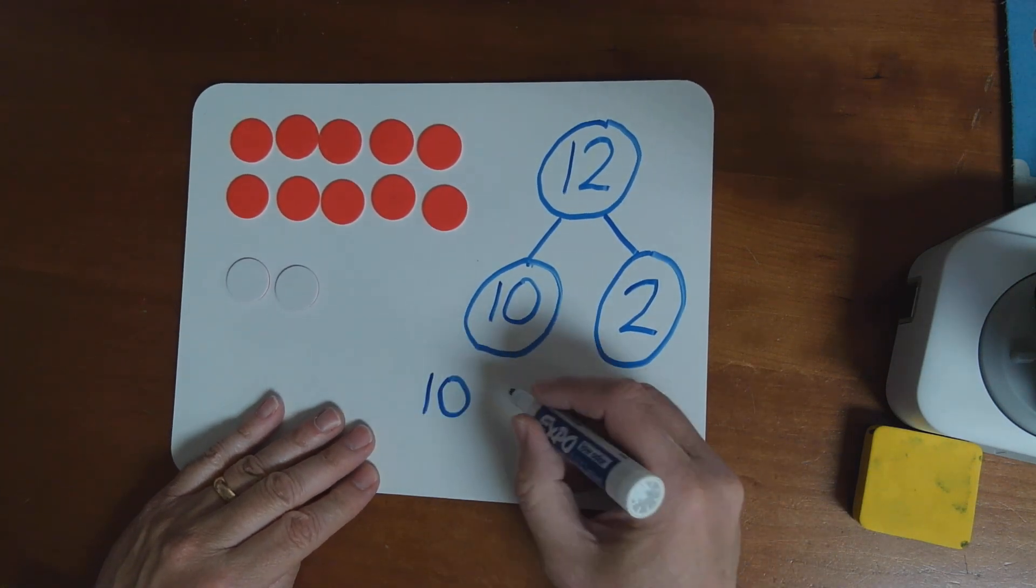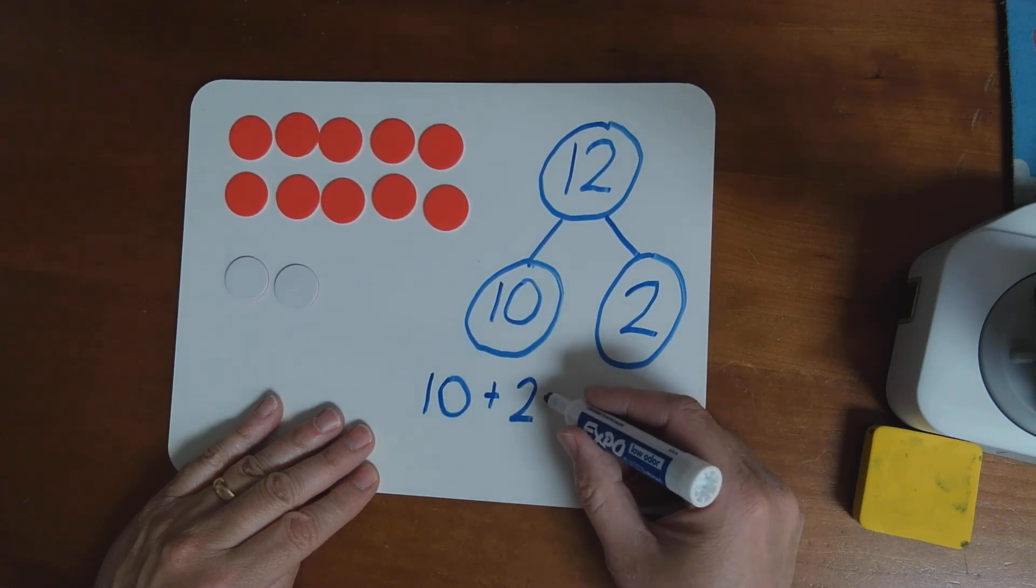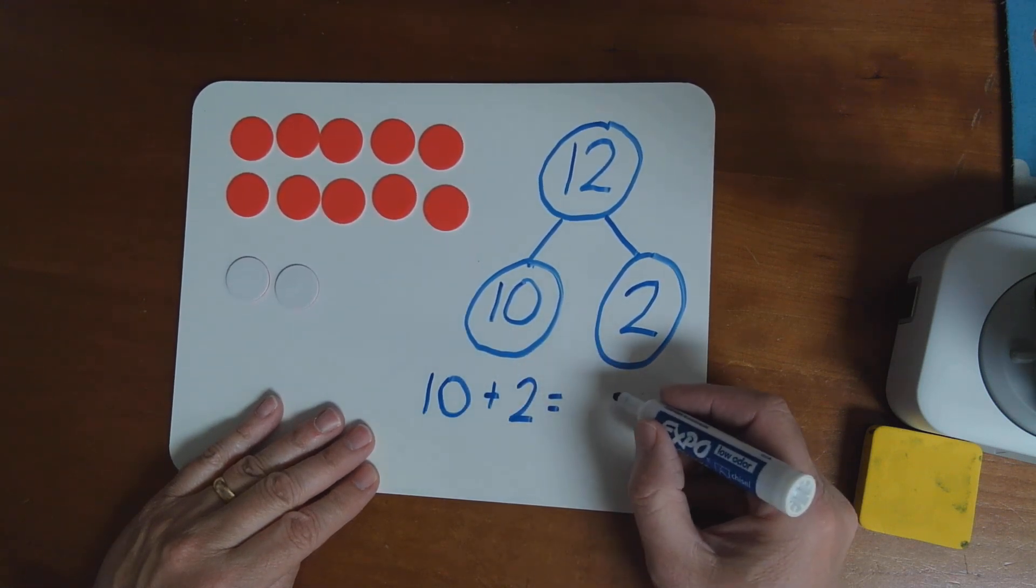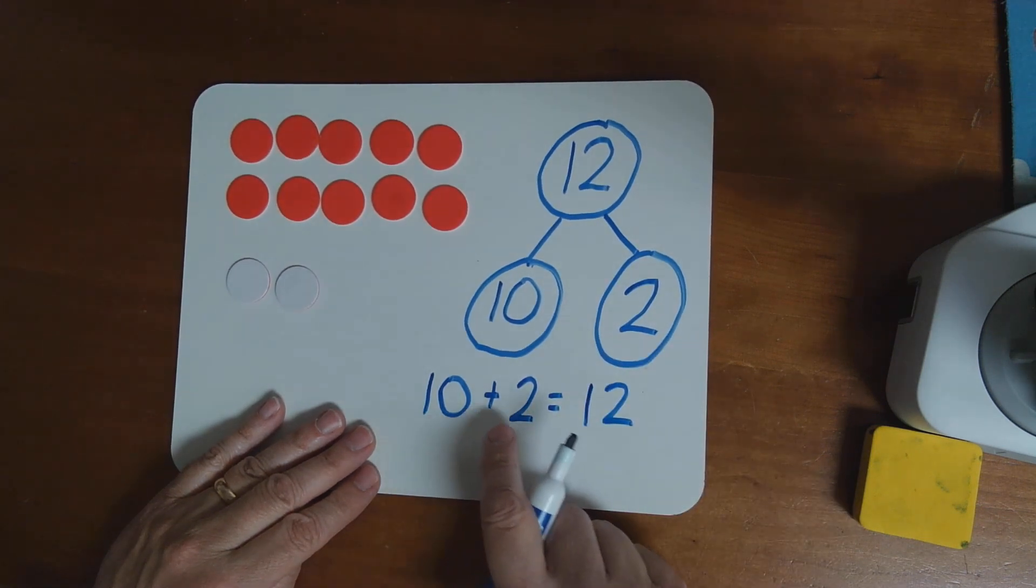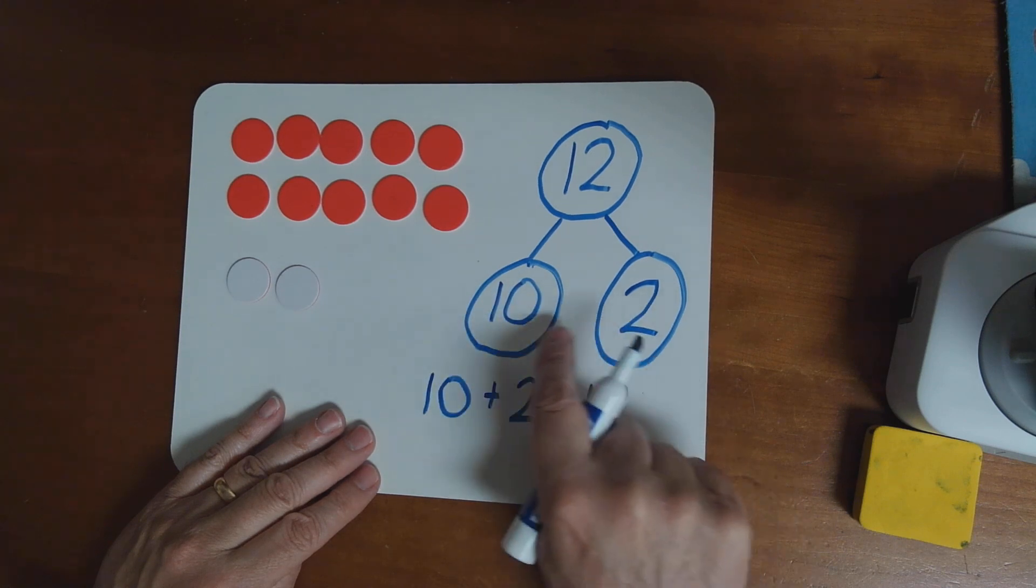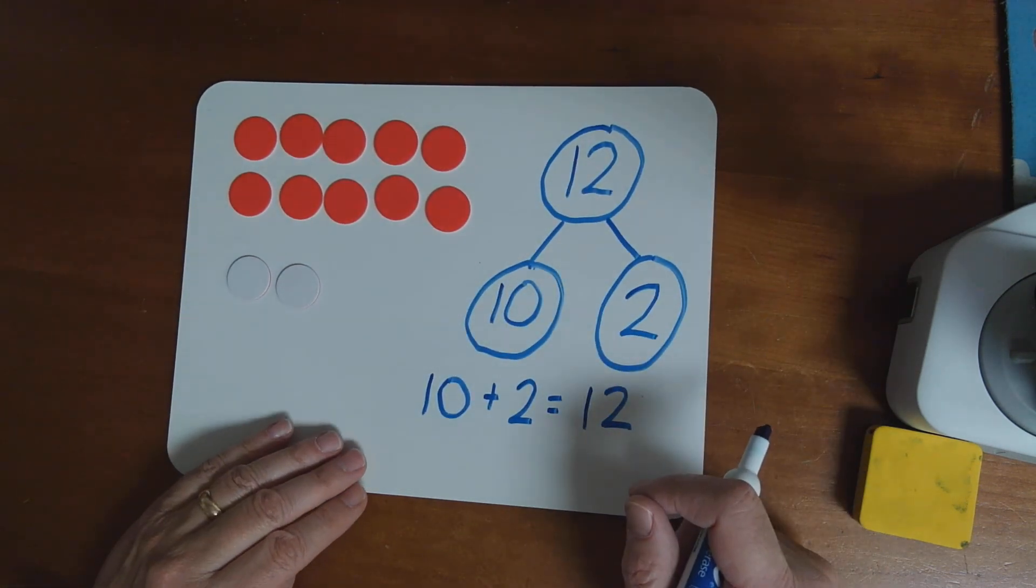And my part 10 and a plus sign plus 2. And I need to do equals 12. 10 plus 2 equals 12. Here, I forgot to say this. We have 10 and 2 make 12. That's what the number bond shows, right?